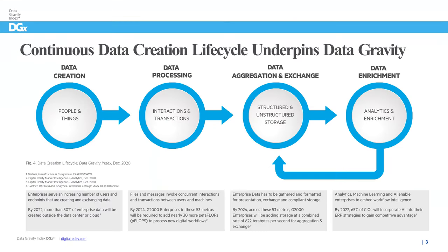How is that happening? It's this continuous data creation lifecycle. We create data, we do something with it, store it, and then folks start to look at it — we do analytics on it, we enrich that data, it gets put back in, and this perpetuates the cycle of the growth of data. We sit in the middle, kind of between the people, the locations, the things that are accessing applications and generating this data, both at the edge and in the clouds.